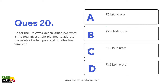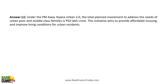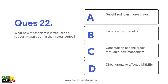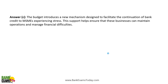Under PM Awas Yojana Urban 2.0, what is the total investment plan to address the needs of urban poor and middle-class families? ₹10 lakh crores has been allocated. The primary purpose of the credit guarantee scheme for MSMEs in the manufacturing sector is to provide credit guarantees without collateral or third-party guarantees for term loans used for purchase of machinery and equipment. A new mechanism has also been introduced to support MSMEs in their stress period through continuation of bank credit.